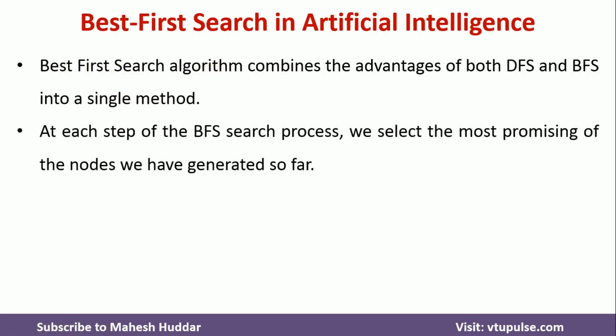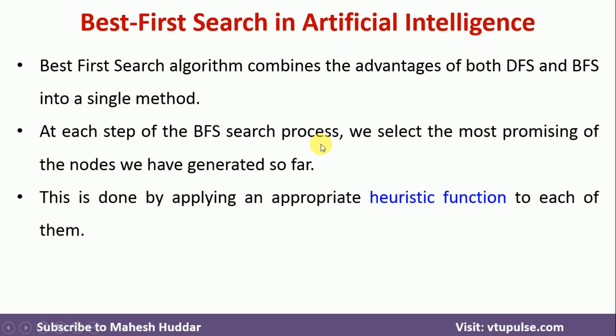At each step in Best First Search Algorithm, we select the most promising node we have generated so far. For example, in a given graph or tree, if we have already generated some n number of nodes, we need to select the node which is most promising at a given point of time. This is done by applying an appropriate heuristic function to each of these nodes which were already generated.